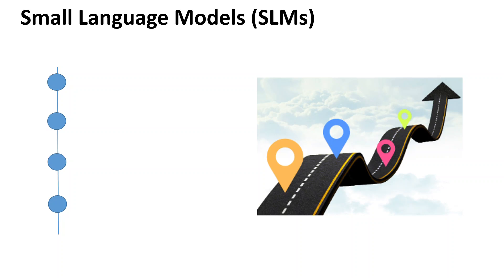That is where I think SLMs are going to change the whole game. These models have fewer parameters — ranging from a few million to a few billion parameters, compared to LLMs with hundreds of billions or even trillions of parameters. SLMs therefore require less compute and memory, making them suitable for deployment on smaller devices or even edge computing scenarios.